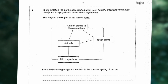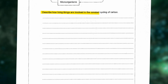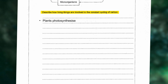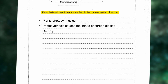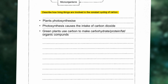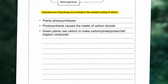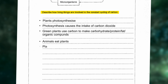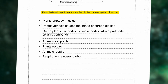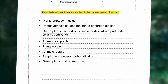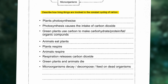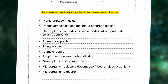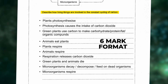The next question is about the carbon cycle as shown in the diagram. Describe how living things are involved in the constant cycling of carbon. The mark scheme covers: plants photosynthesize, causing the intake of carbon dioxide; green plants use carbon to make carbohydrates, proteins, fats, and other organic compounds — naming a few of these strengthens your answer; animals eat plants; plants and animals respire, releasing carbon dioxide; green plants and animals die; microorganisms decay or decompose dead organisms; and finally the microorganisms respire. This is all the information you need to explain the carbon cycle in a six mark format.